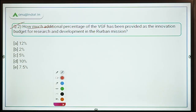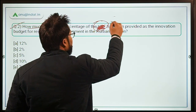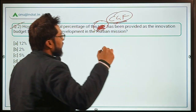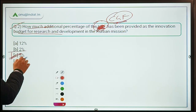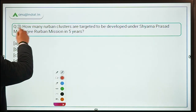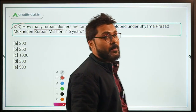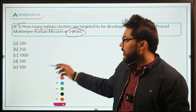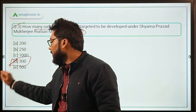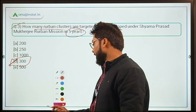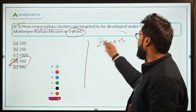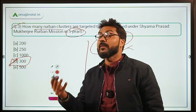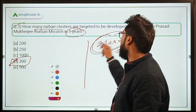Another question: What additional percentage of CGF is provided as the Innovation Budget? The answer is 5%. How many rurban clusters are targeted to be developed under the scheme in five years? The answer is 300. Note: In 2020, the Ministry of Rural Development sought a two-year extension for this scheme, though it had not been sanctioned at the time of this session.